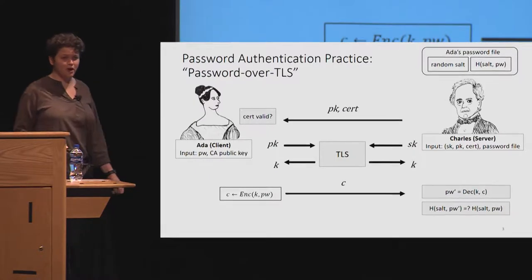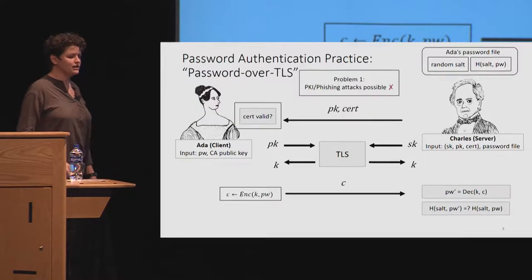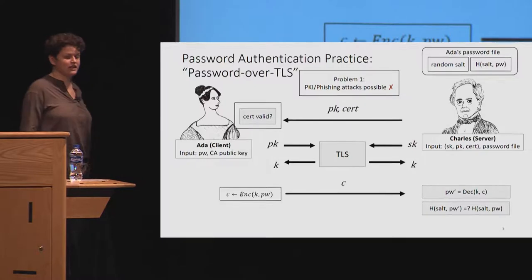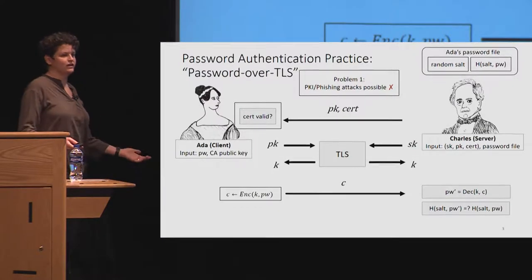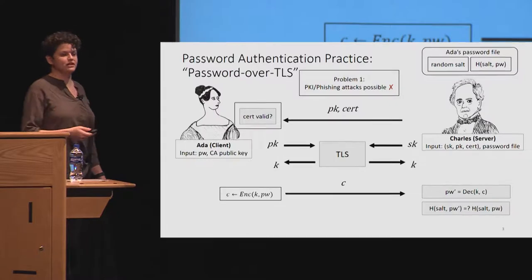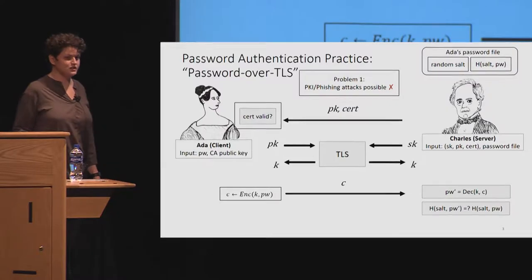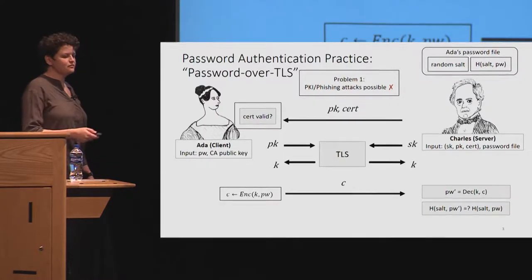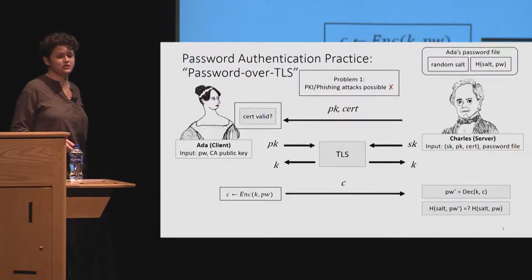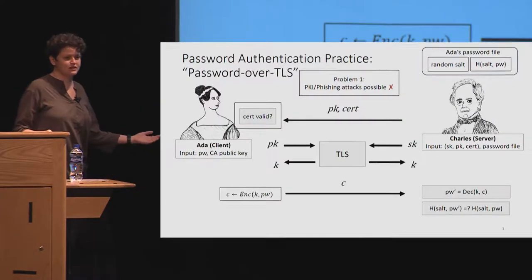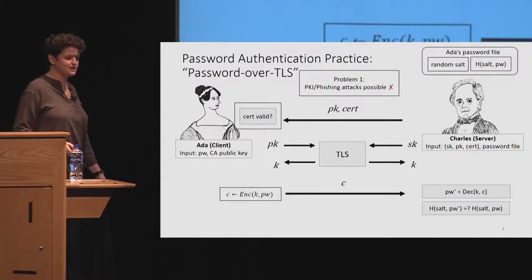But there are at least two problems with this method. One is that it relies on PKI, and we all know there are many attacks on PKI. One example is phishing — Ada believes she's talking to Charles, but she's actually talking to a malicious server. If that's the case, she basically just sends her password to a malicious server and all of her security regarding her password is lost.